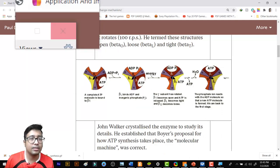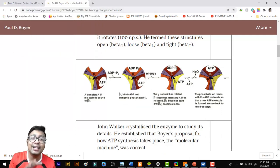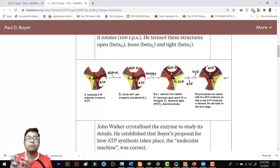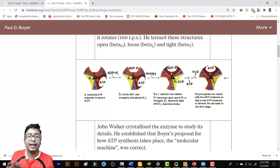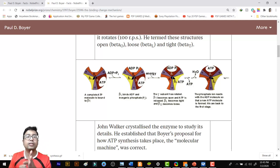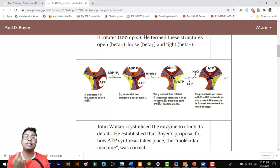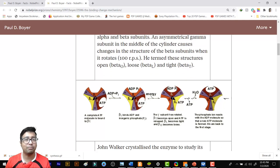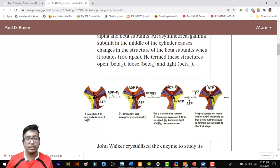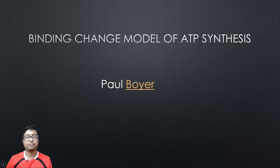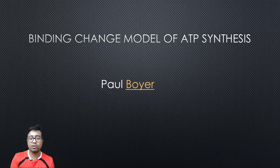The binding of ADP to the F1 subunit changes the conformation of the beta subunit: tight to open, loose to tight, and open to loose. This is known as the binding change model. You need to draw this diagram along with the four steps. This rotation is very fast — it undergoes 100 rotations per second. This was the binding change model of ATP synthesis.